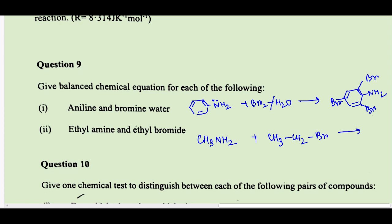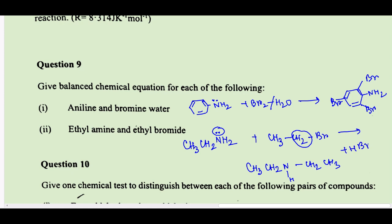For ethylamine with ethyl bromide: ethylamine is CH₃CH₂NH₂ — the amine nitrogen is the nucleophilic center, and the carbon in ethyl bromide (CH₃CH₂Br) is the electrophilic center. The product is CH₃CH₂−NH−CH₂CH₃, and the byproduct is HBr. Balancing the equation and writing the necessary products.